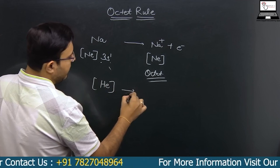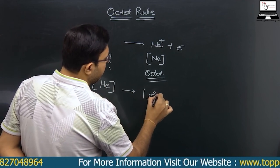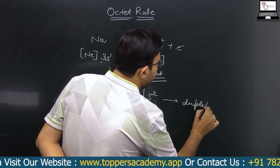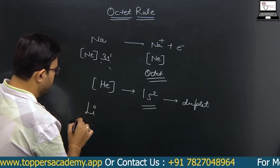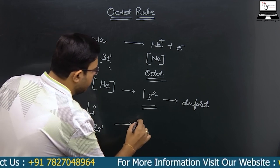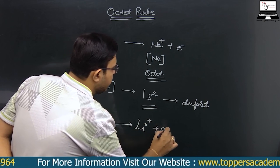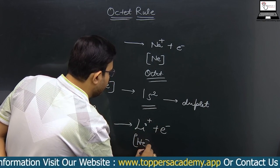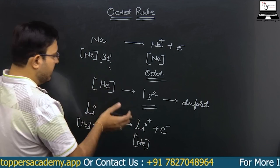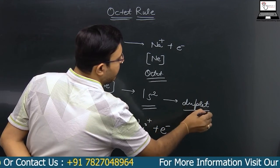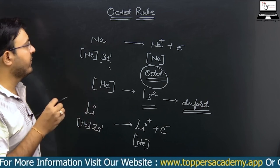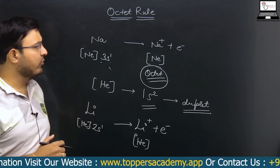Some atoms do not complete an octet. For example, helium has the configuration 1s², so rather than an octet it completes a duplet. Similarly, lithium has the configuration [He] 2s¹; when it loses its electron to become Li⁺ it attains the helium configuration, completing its duplet. When electrons are very few, atoms complete their duplet; otherwise every atom wants to complete its octet.